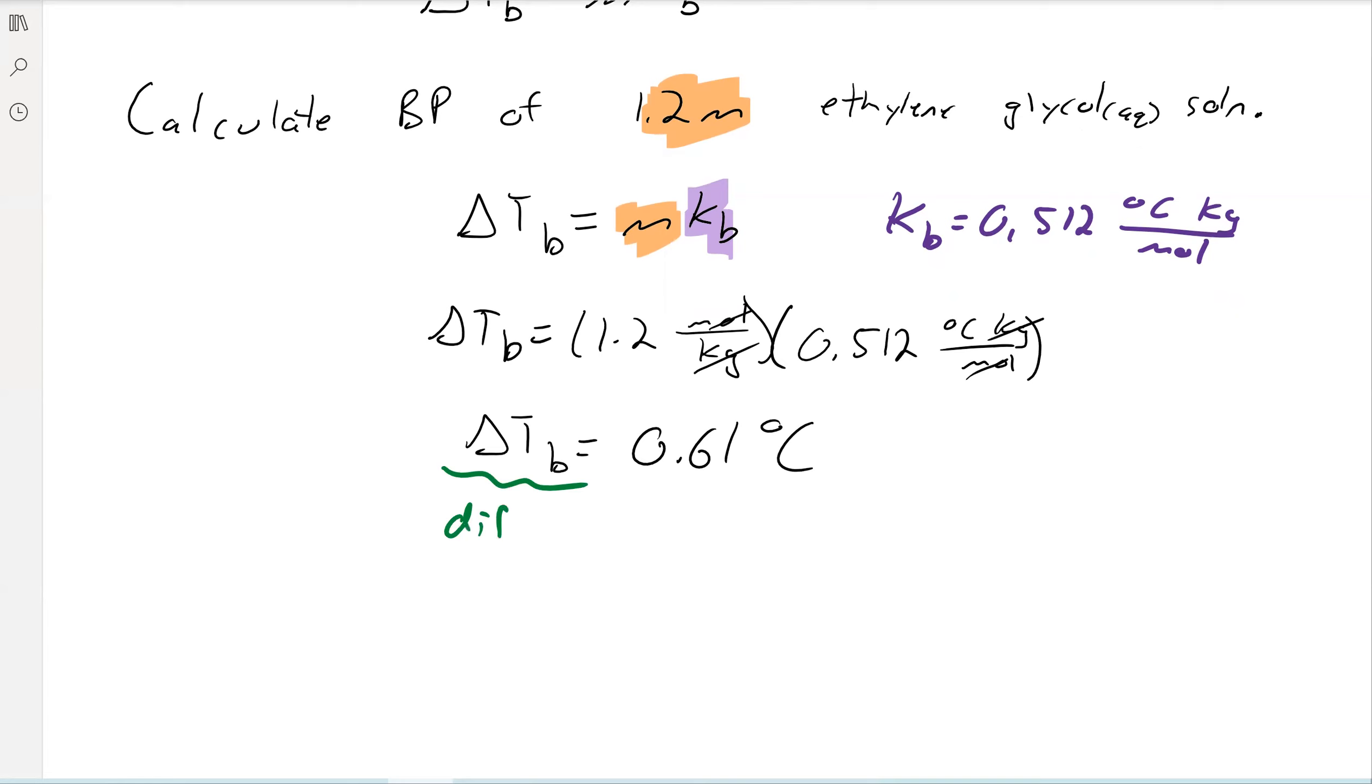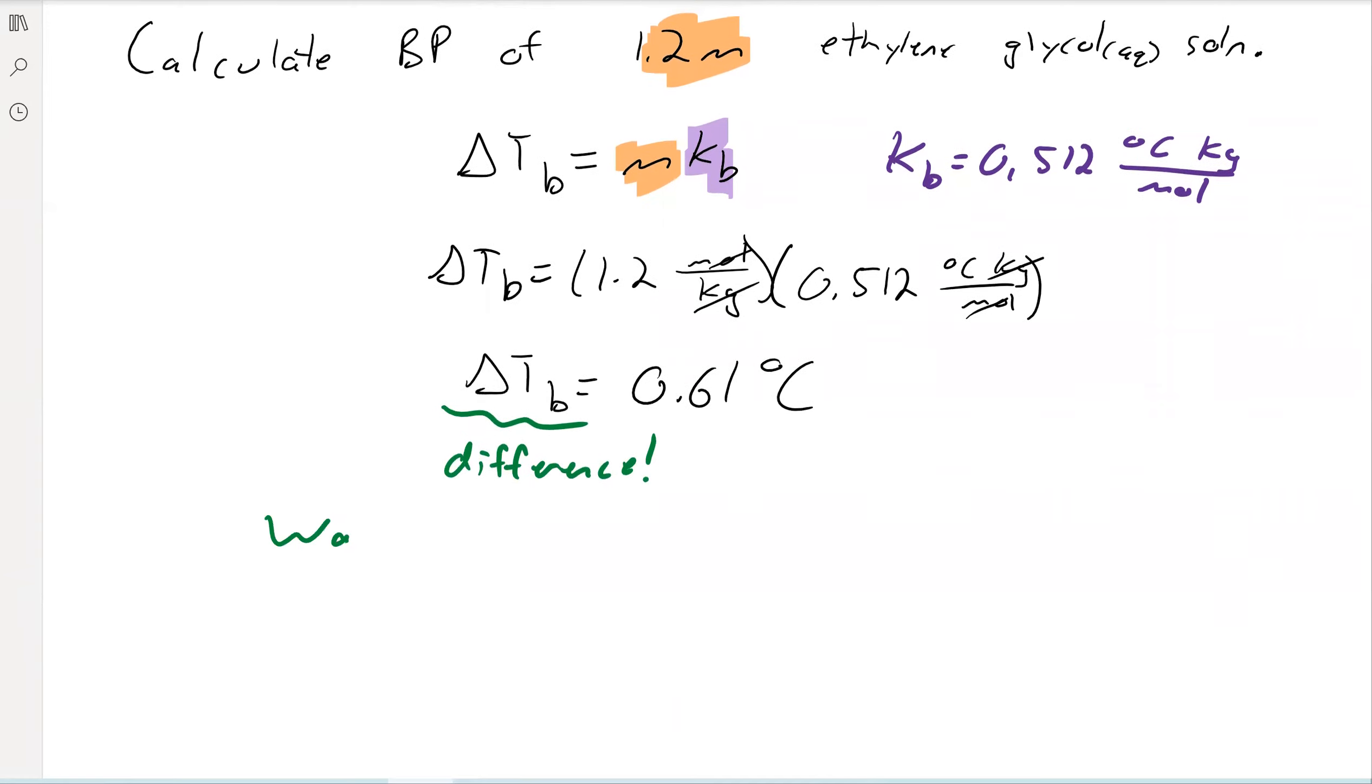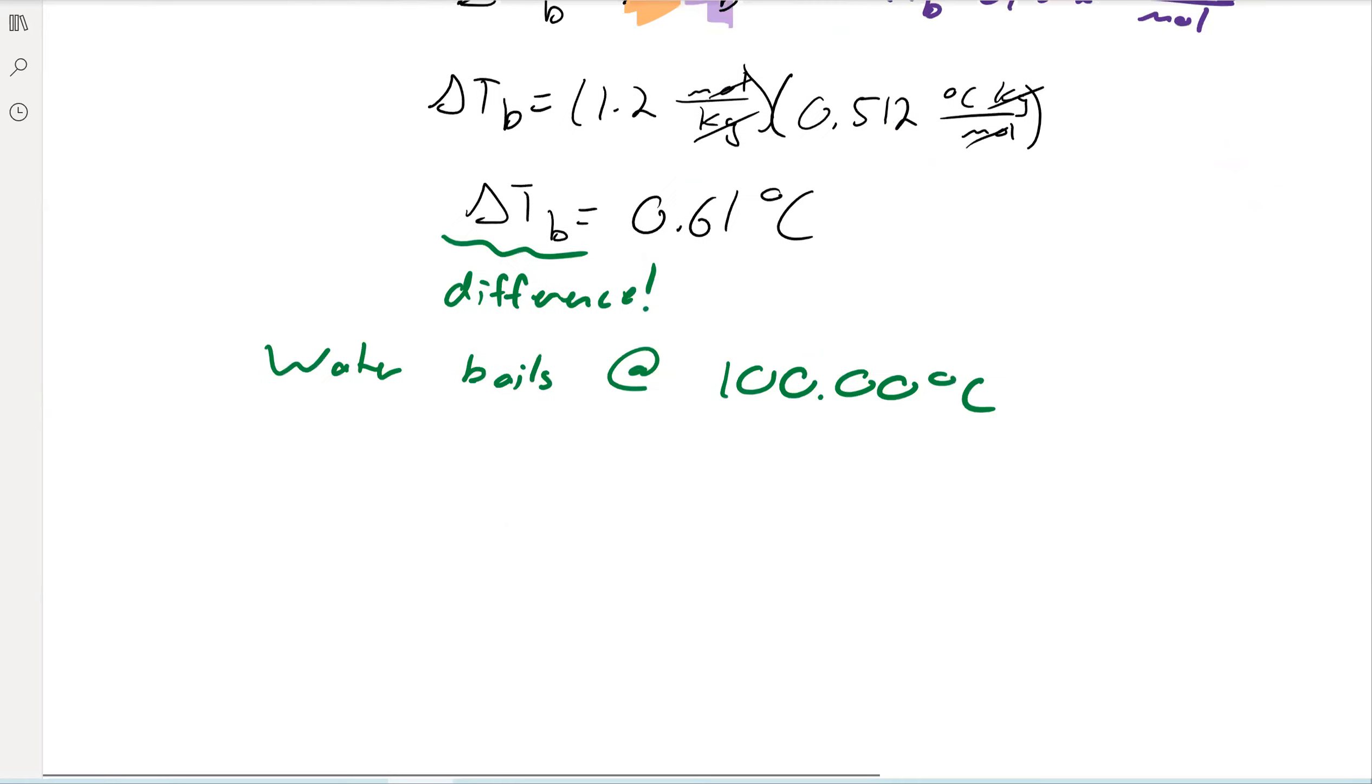So remember that this is the difference, not the final value, right? Water normally boils at 100.00 degrees Celsius. And so since we have elevation here, we want to add our value, right? This is the difference. We want to add it onto our 100. You can make it a fancy equation, or you can just think about it logically, whatever you want to do. At the end, we get the value of 100.61 degrees Celsius, right?